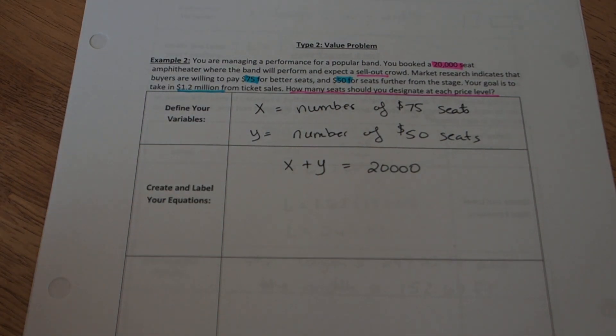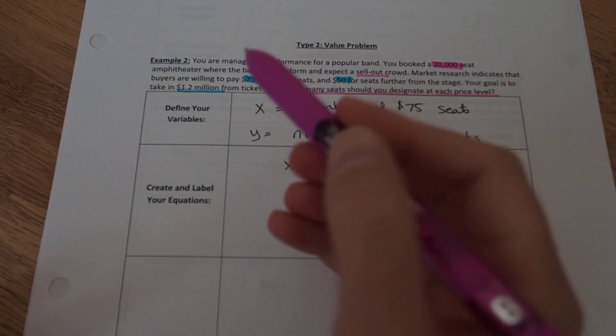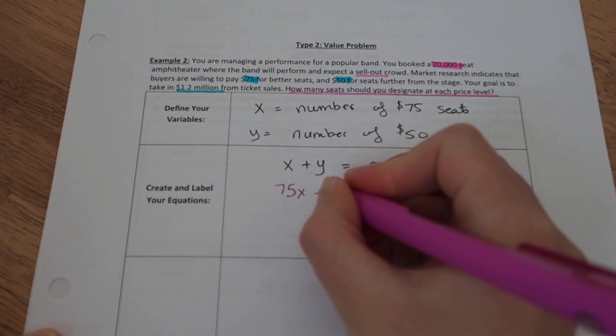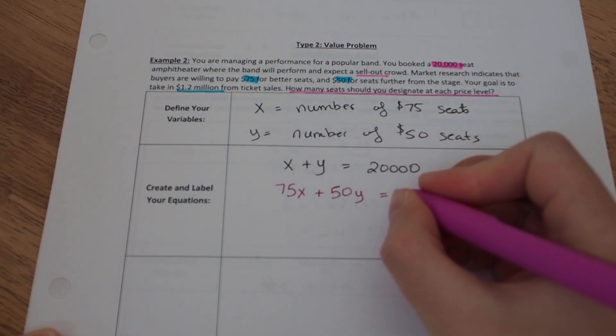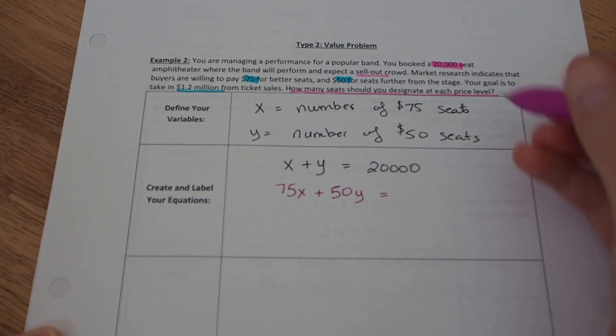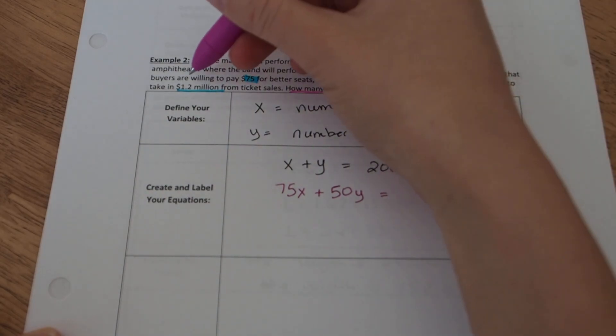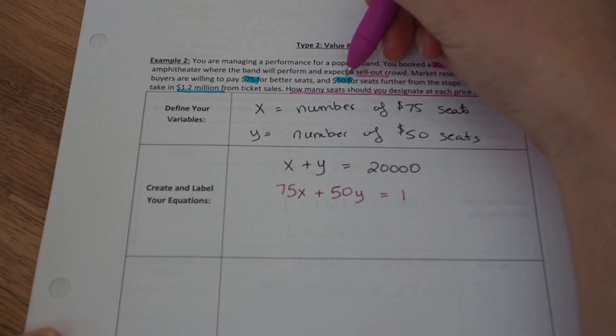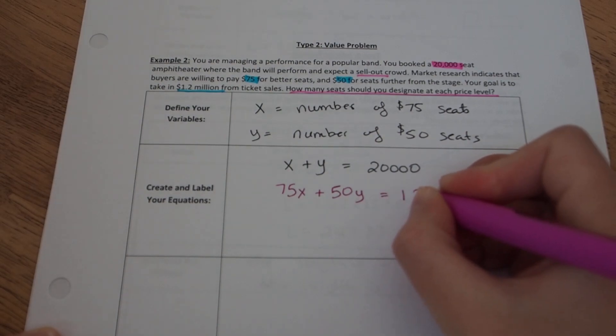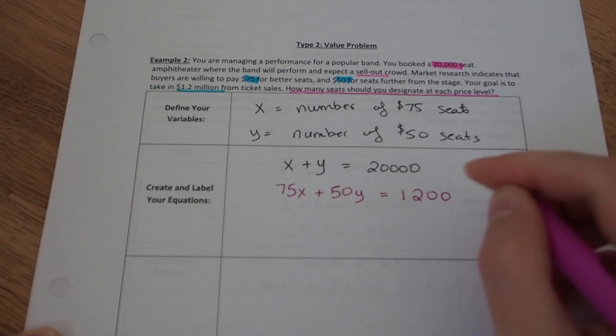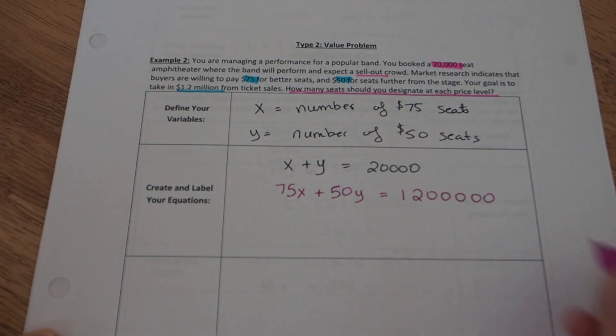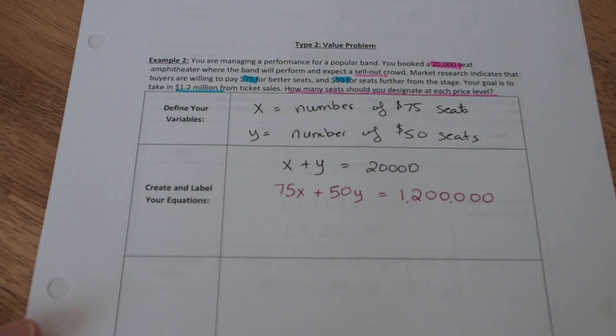Now, the second equation is the value equation, and that equation comes from the fact that the X seats are worth $75, so 75 times X, plus the Y seats are worth $50, so $50 times Y, would equal the total amount of money that we bring in. $75 for each of these, $50 for each of these, will equal the total amount of money. The total amount of money is 1.2 million. I can't just write 1.2 here because the units in 75 and the units in 50 are not millions, so I need to write it out in full form. So 1.2 million is going to be 1,200,000.